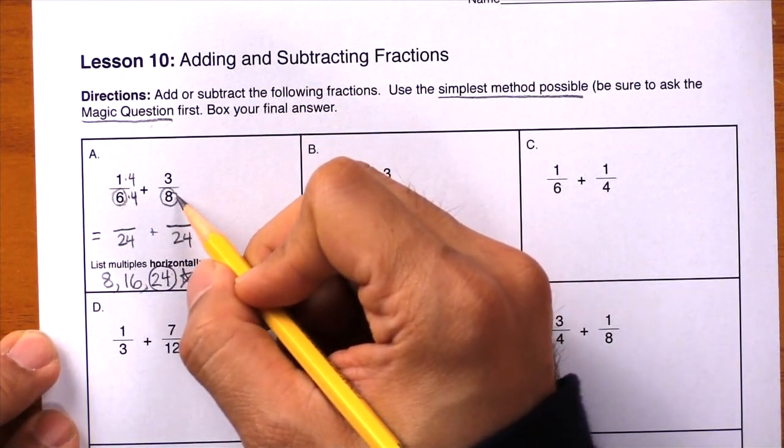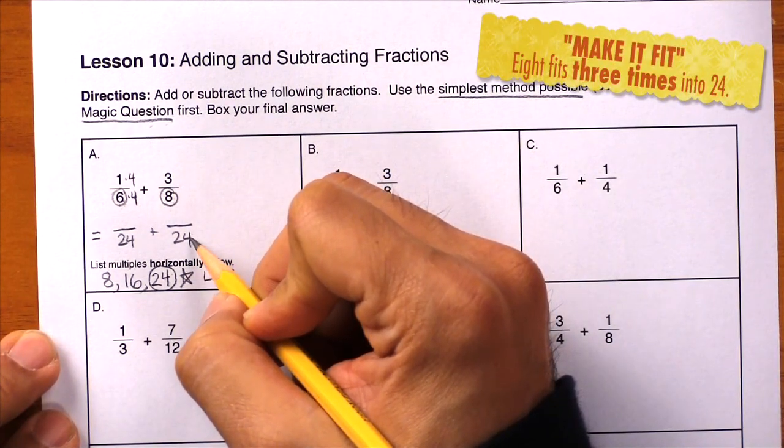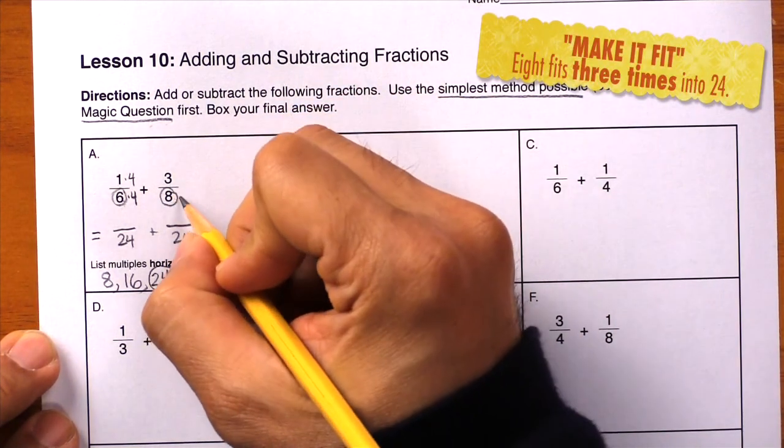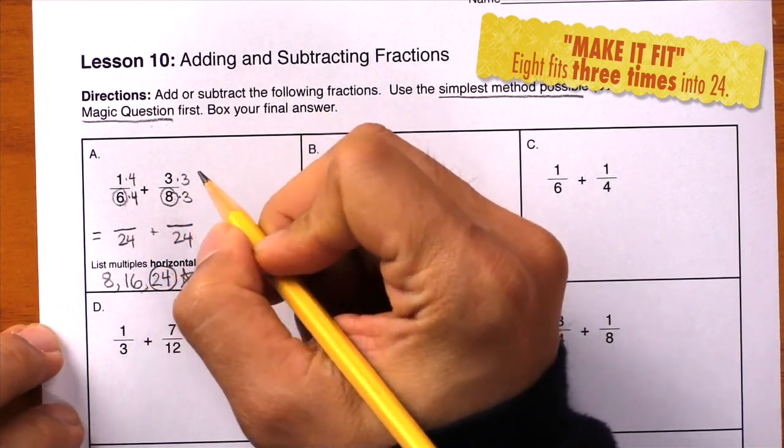Now on the other side, how did we get from eight to twenty-four? And we did that by multiplying by three. So write times three in the denominator times three in the numerator.